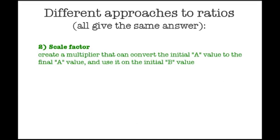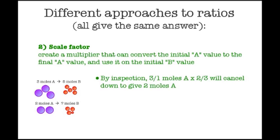Now in the scale factor method, we have to come up with a factor or multiplier that allows us to convert our initial A value to our final A value, and then we use this also on the B value. Here's the same example. By inspection and thinking about how multiplied fractions cancel down, we choose two-thirds as our multiplier.